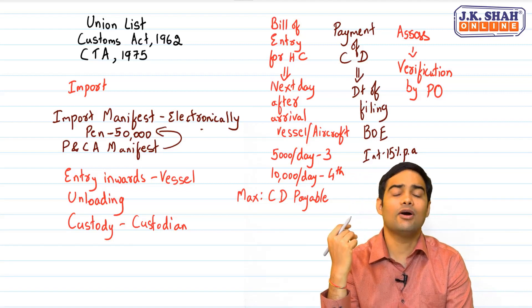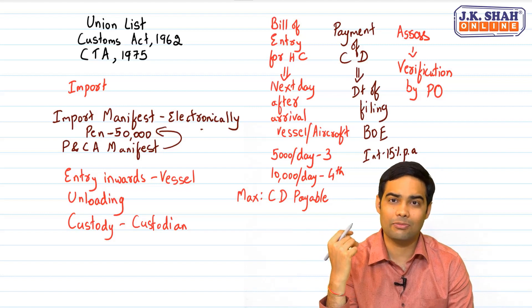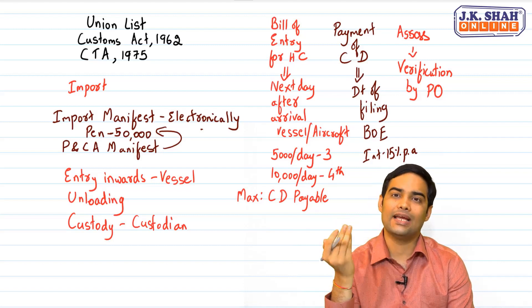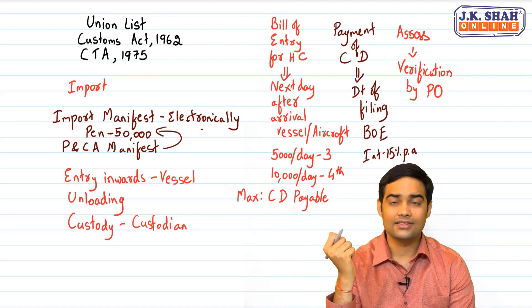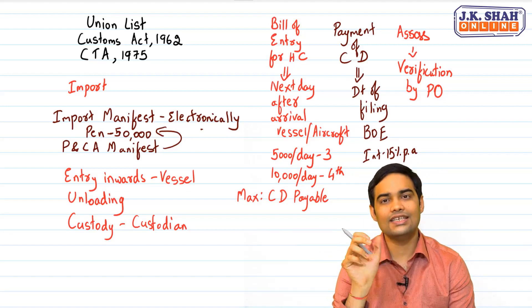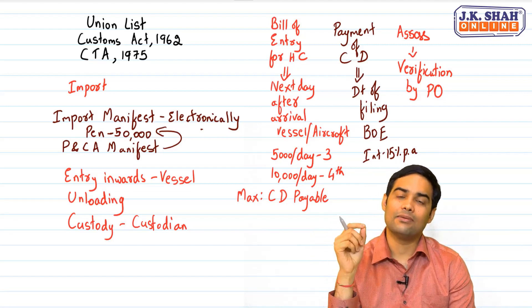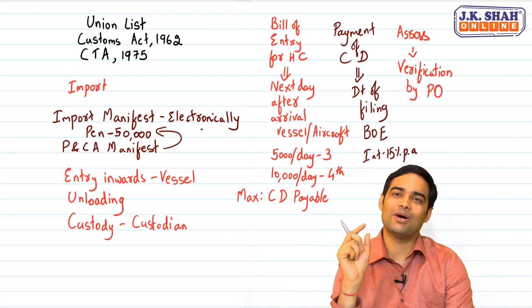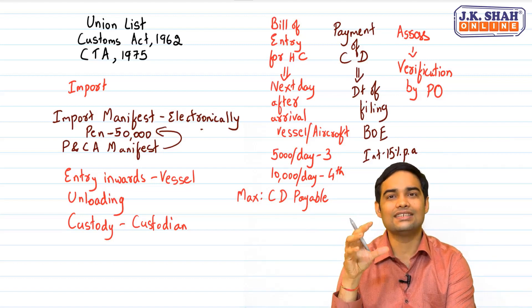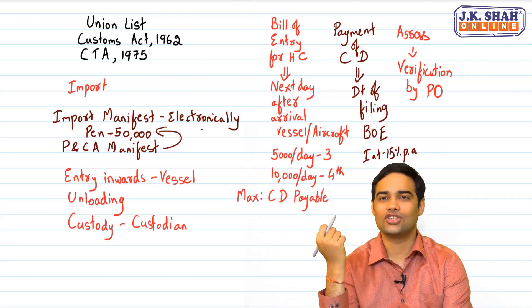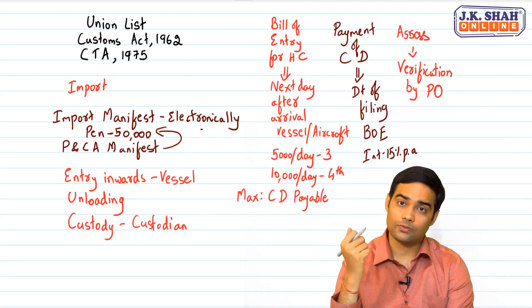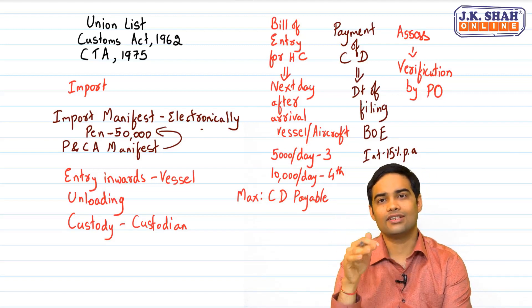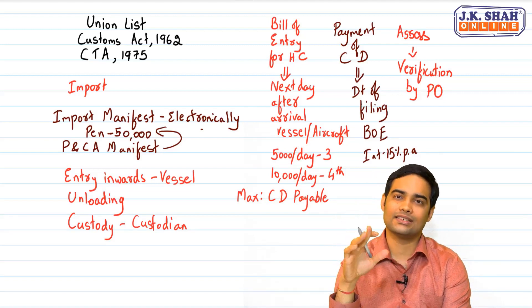There is a deferred payment scheme available for authorized economic operators. Any clearance done between the 1st and 15th of the month can be paid by the 16th. Clearances between the 16th and end of month can be paid on the 1st of the next month. For March, payment must be made by 31st March. Payment of custom duty online is mandatory for authorized economic operators and wherever the amount exceeds 10,000.